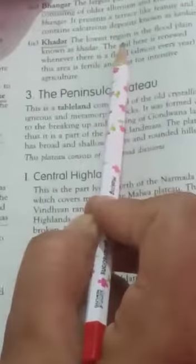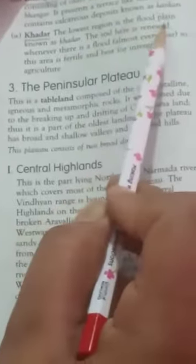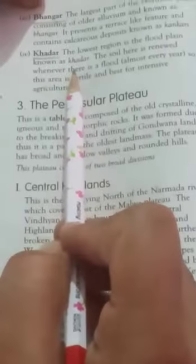The lowest region is the floodplain, known as Khadar. The soil here is renewed whenever there is a flood, almost every year. This area is fertile and best for intensive agriculture.